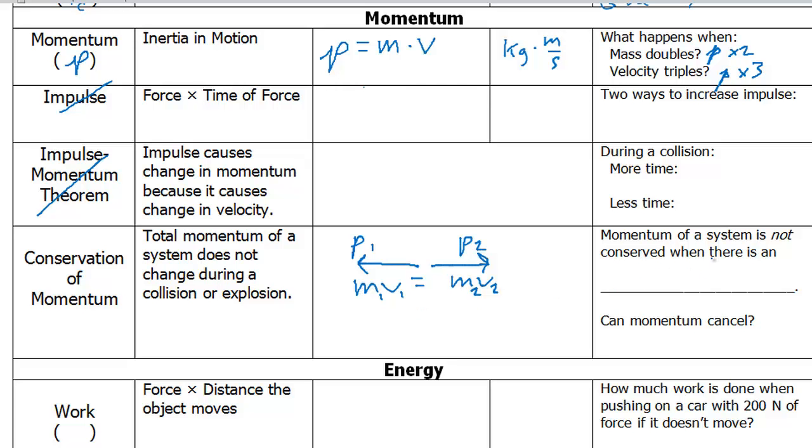The momentum of a system is not conserved when there is an external force. The example of the two students pushing off each other, they're experiencing an internal force between the two of them. But if you have some force from the outside, like friction acting on one of the skateboards but not the other, or gravity if they're on a hill, then that would not result in momentum being conserved.